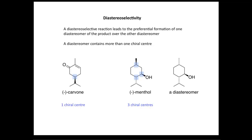We have a different configuration at the top chiral center. Here the methyl group is pointing towards us, and in this diastereoisomer it is pointing away from us. But the other two chiral centers have the same configuration. So as one chiral center is different but the others are the same, this is indeed a diastereoisomer of menthol.